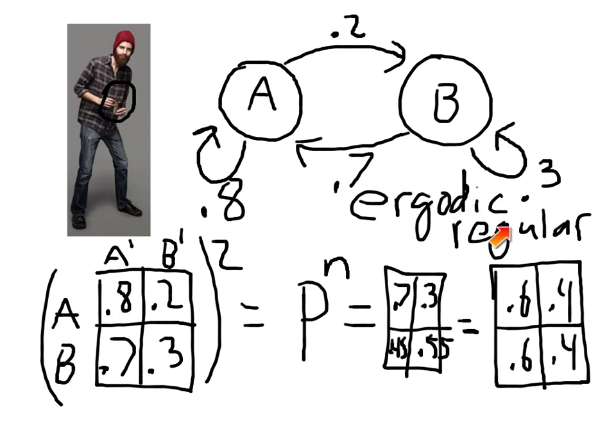Remember, so all things that are ergodic are regular, but not all things that are regular. I mean, sorry, all things that are regular are ergodic, but not all things that are ergodic are regular. You can have one, for example, that oscillates between two different states, and that, therefore, all states can reach other states, but it won't be regular.